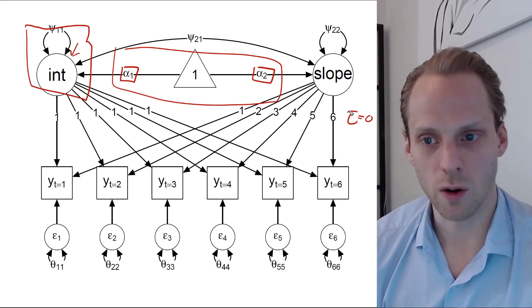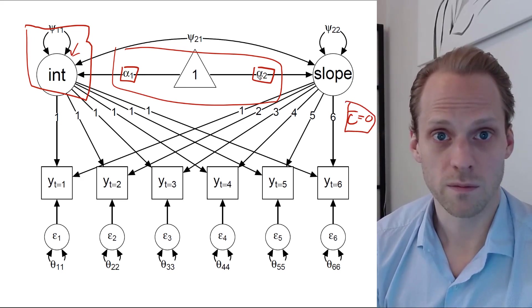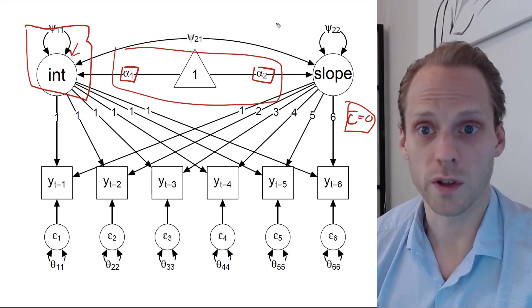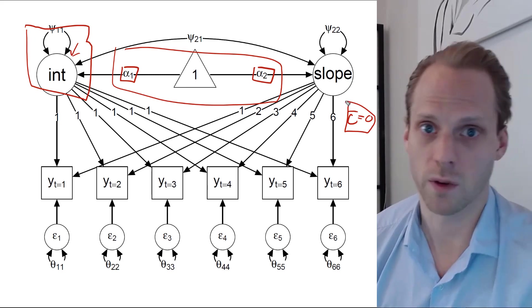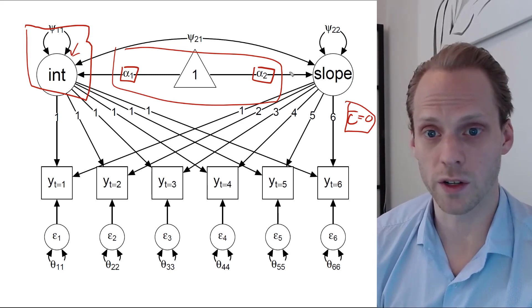So because we set tau equals zero, this alpha now is identified. So otherwise, you set alpha equals zero and tau is identified, but we can do it the other way around. We can set all these to zero, and then this is identified.